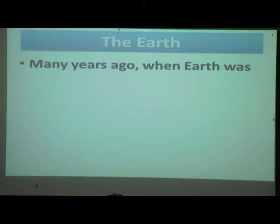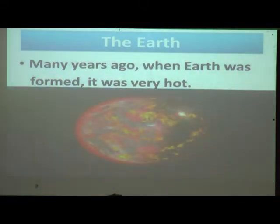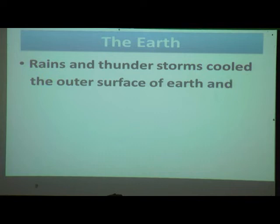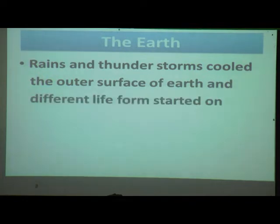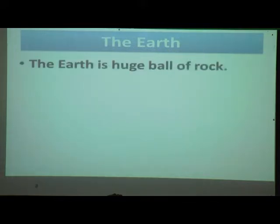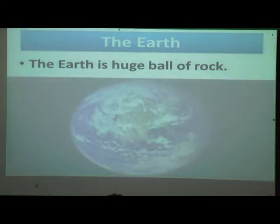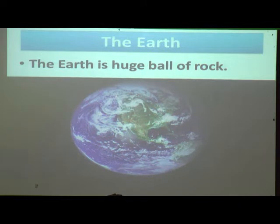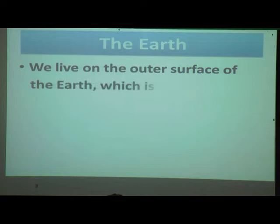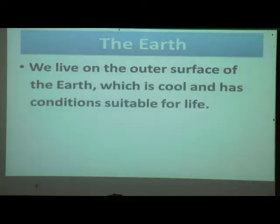Many years ago when the earth was formed, it was very hot. But afterwards, rains and thunderstorms cooled the outer surface of the earth and different life forms started on the earth's surface. The earth is a huge ball of rock — inside there are many rocks. We live on the outer surface of the earth, which is cool and has conditions suitable for life.